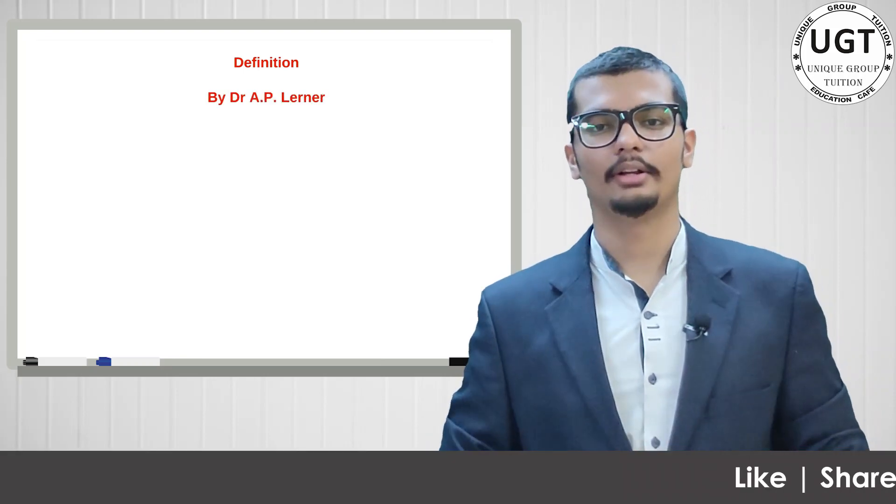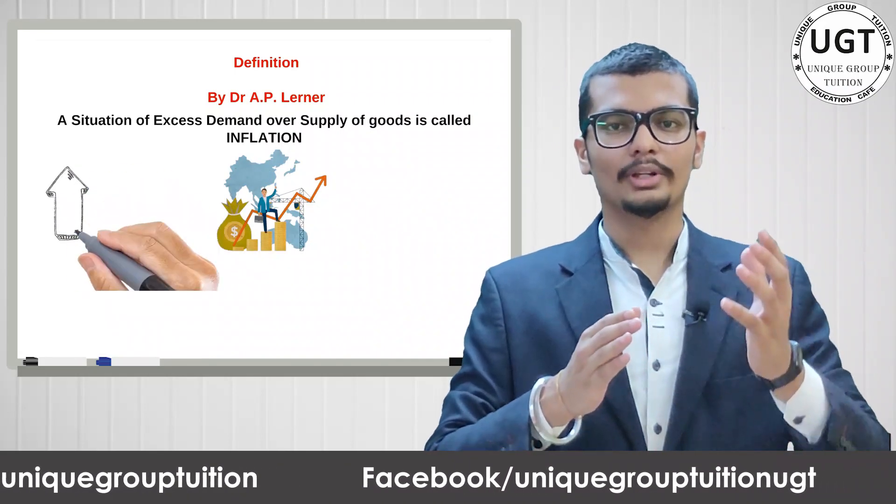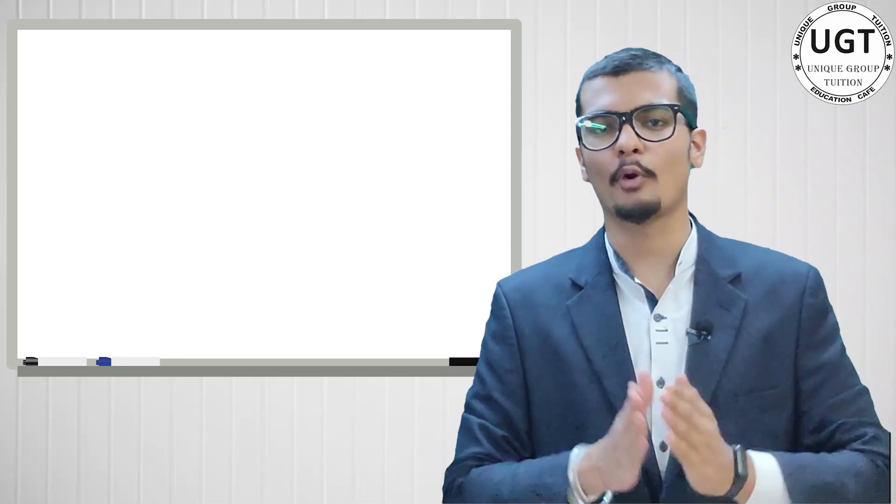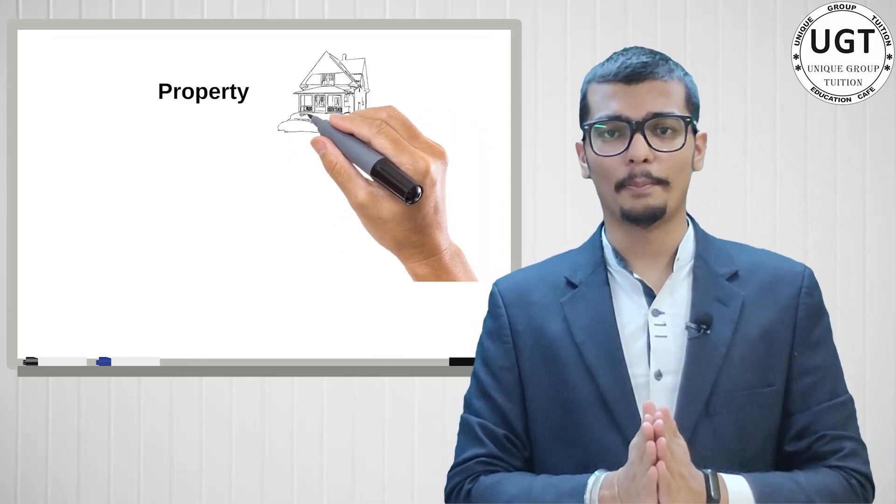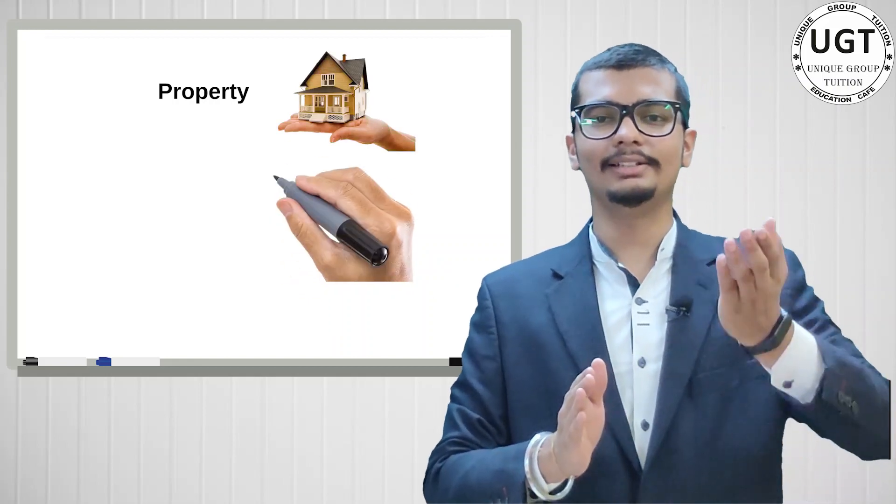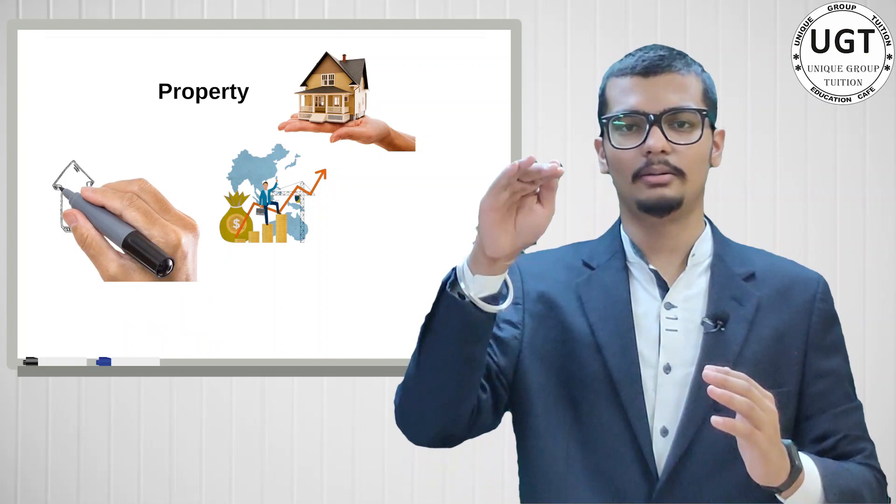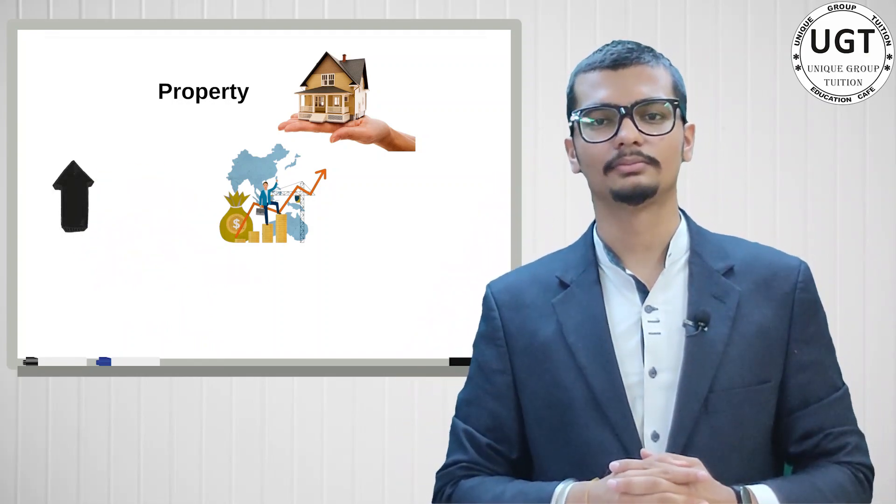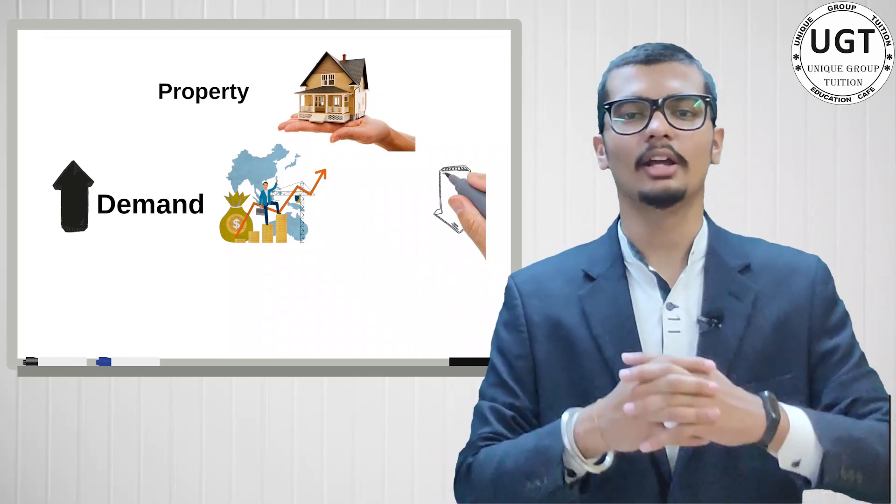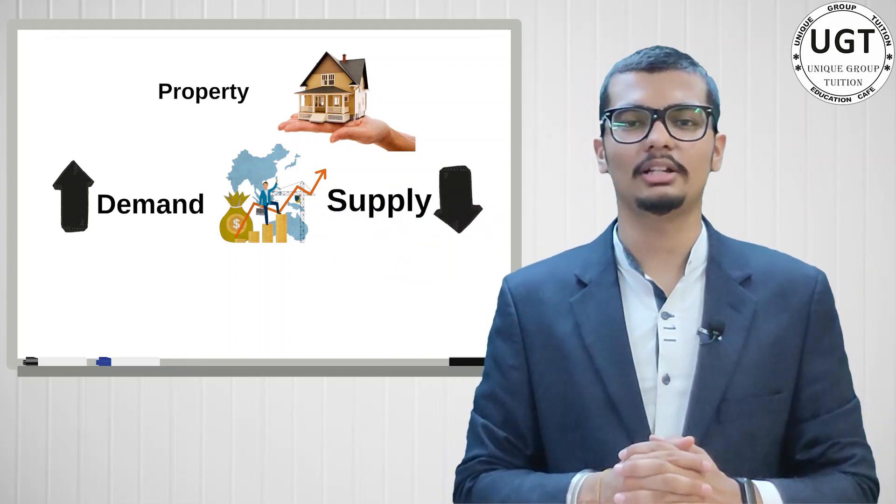Next, definition of inflation according to Dr. AP Lerner: excess of demand over supply is called inflation. For example, if there's a property and the demand for that property is very high, like in Ahmedabad where property demand is high but construction is less, then property price increases, which is real estate inflation - price rise.